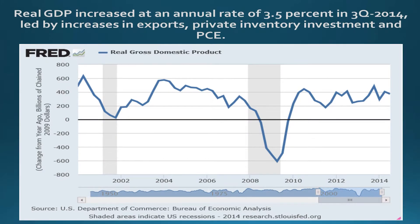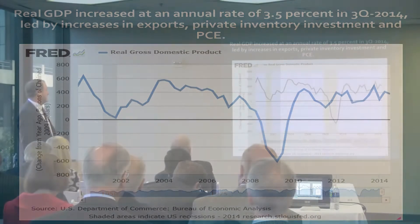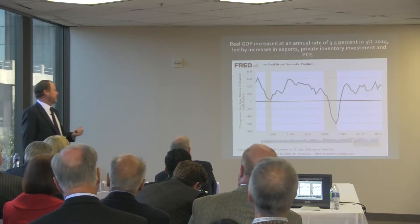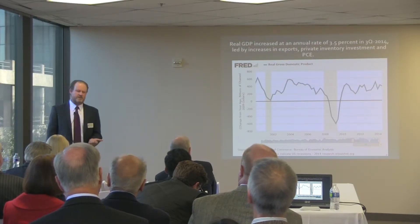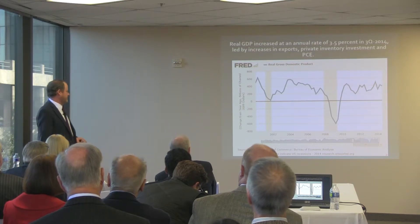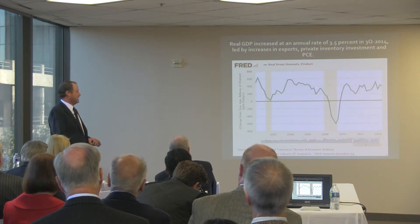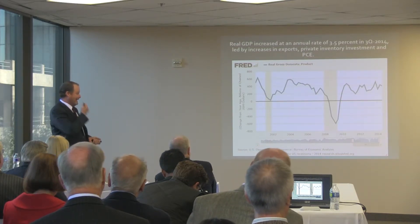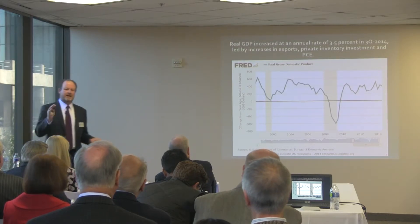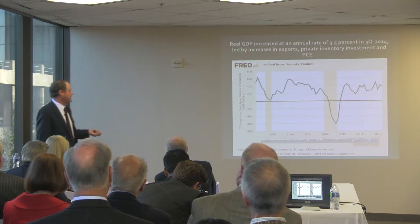GDP — Gross Domestic Product, the measure of output of all goods and services in the United States — is growing at an annual rate of 3.5% as of the third quarter, the most recent data. That growth has been led by increases in exports, private inventory investment, and personal consumer expenditures. We had a big recession, but we're back on trend for economic growth, though it's been slow.